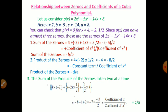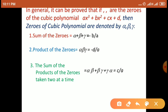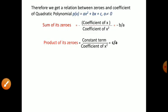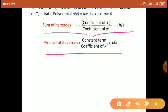Friends, in a previous lecture, we have seen the sum of zeros formula. The formula of sum of zeros of a quadratic polynomial — quadratic polynomial का formula हमने देखा है — sum of zeros is equal to minus b upon a, where minus b means coefficient of x, and a means coefficient of x square.